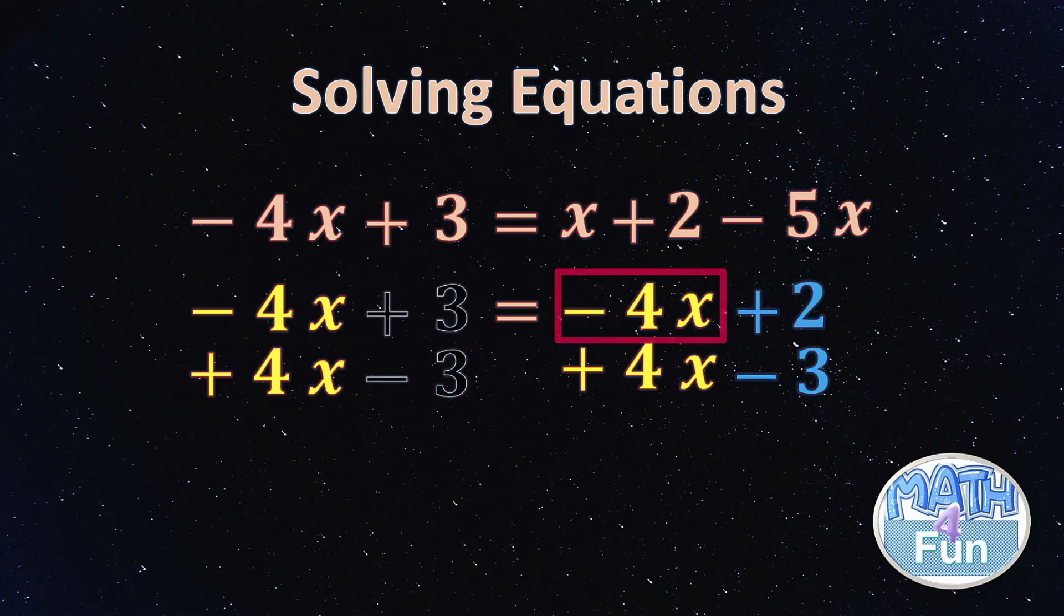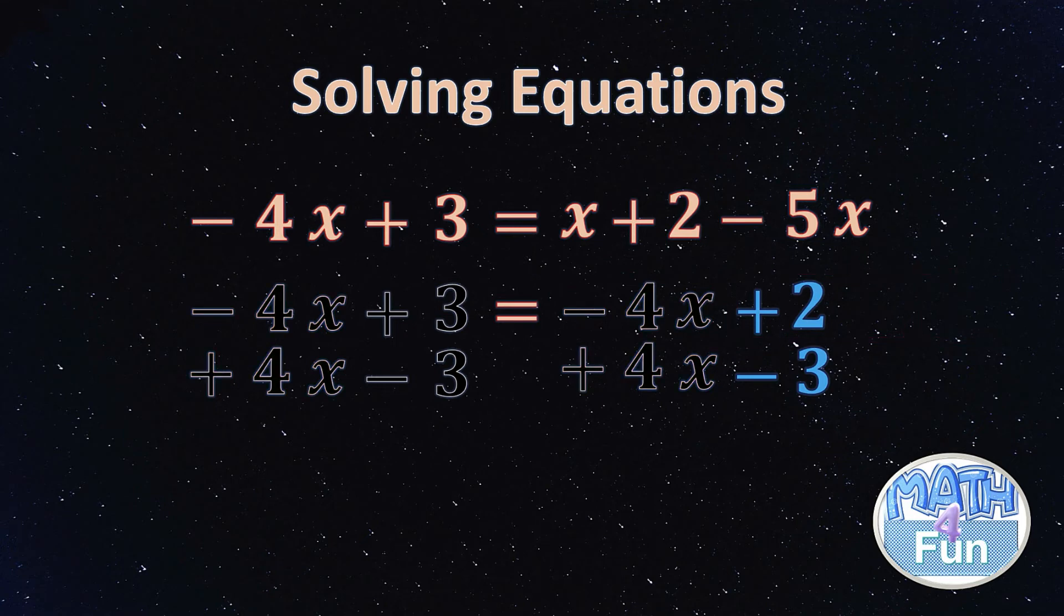Look, +3 - 3 will give us 0. -4x + 4x on both sides will give us 0x. So you're left with 0x equals 2 - 3, which is -1. And now, let's try numbers.